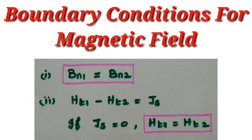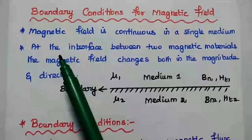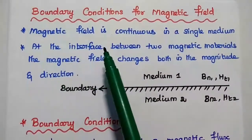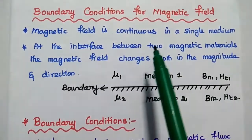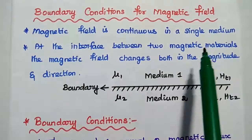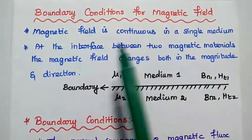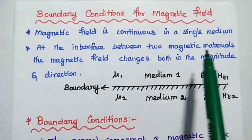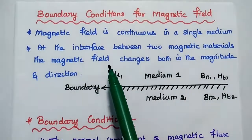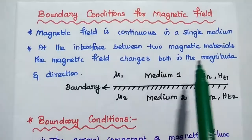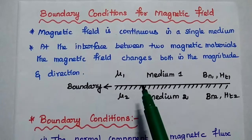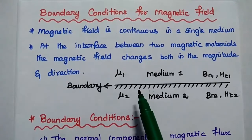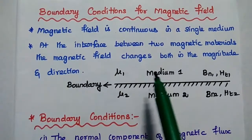Dear students, now we are going to discuss boundary conditions for magnetic field in detail. In general, magnetic field is continuous in a single magnetic medium. If we are going to interface two magnetic materials with different permeabilities, then at the interface between the two magnetic materials, the magnetic field component changes both in magnitude as well as direction. Therefore, we can obtain boundary conditions for this magnetic field at this boundary.